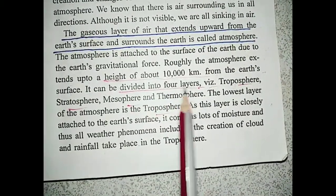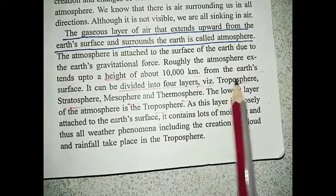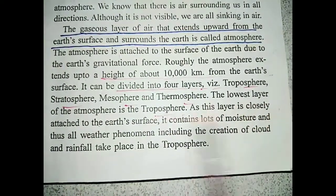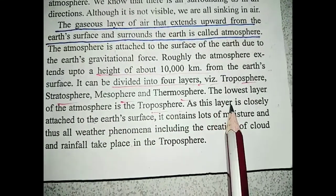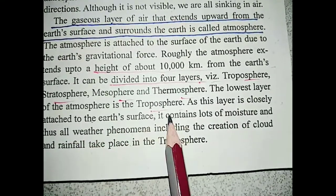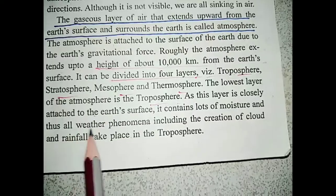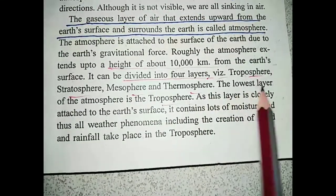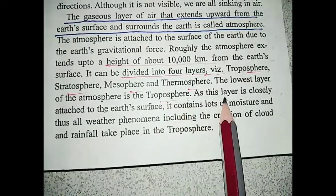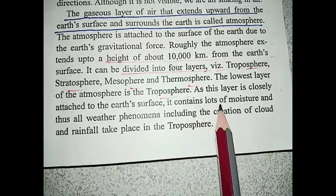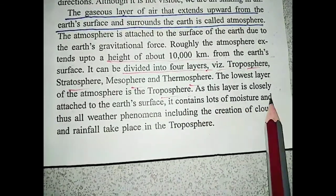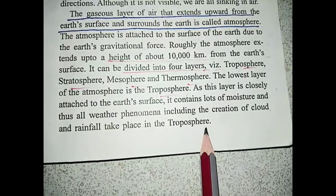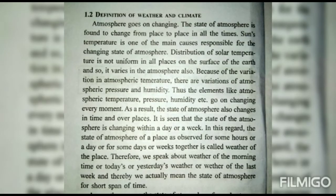The atmosphere can be divided into five layers: troposphere, stratosphere, mesosphere, thermosphere, and exosphere. The lowest layer, the troposphere, is closely attached to the earth's surface. It contains lots of moisture, and thus all weather phenomena including the creation of clouds and rainfall take place in the troposphere.